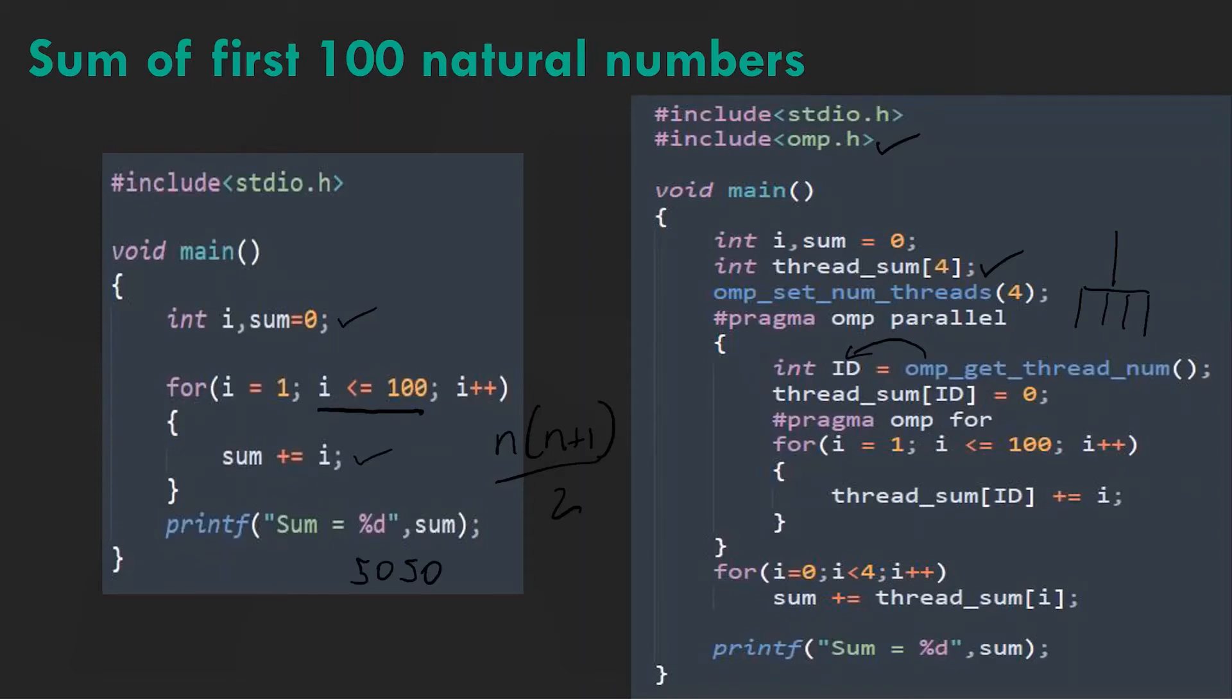Now we initialize the position of thread_sum array indexed by the thread id as zero. I think you must have an idea of what we're trying to do here.